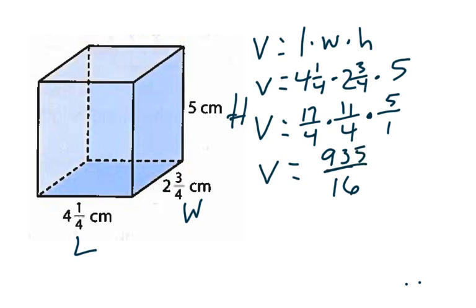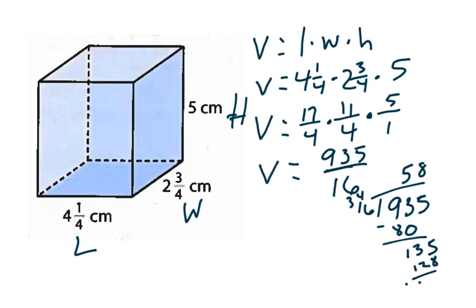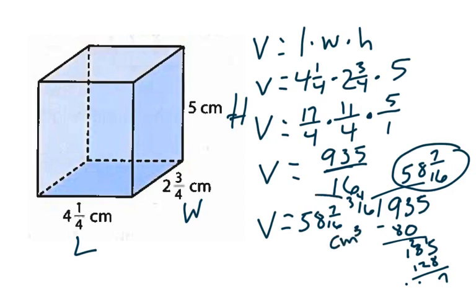Now, that is an improper fraction, so we have to simplify that into a mixed number. So, we are going to take 935 and divide that by 16. 16 goes to 93, 5 times. 16 goes into 35, 8 times. So, I am going to regroup. And now I get 58 and 7 sixteenths for my volume. Volume is equal to 58 and 7 sixteenths centimeters cubed for my answer.